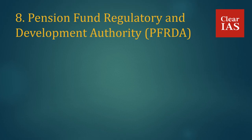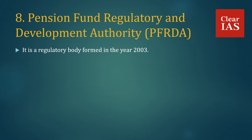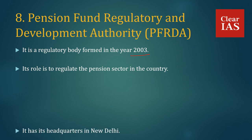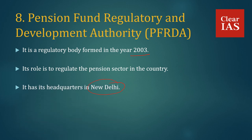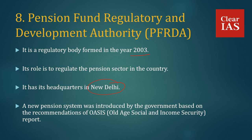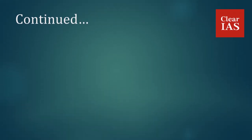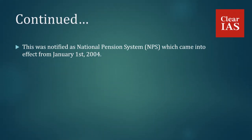Pension Fund Regulatory and Development Authority — PFRDA. It is a regulatory body formed in 2003. Its role is to regulate the pension sector in the country. Its headquarters is in New Delhi. A new pension system was introduced by the government based on the recommendations of OASIS, i.e. the Old Age Social and Income Security Report. This was notified as NPS, i.e. the National Pension System, which came into effect from 1st January 2004. This NPS is also regulated by PFRDA.